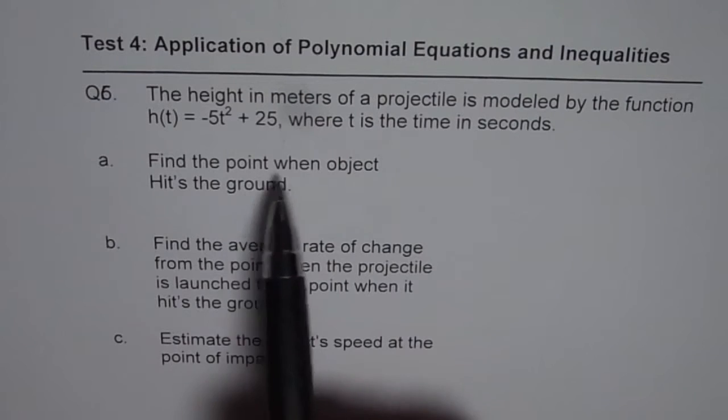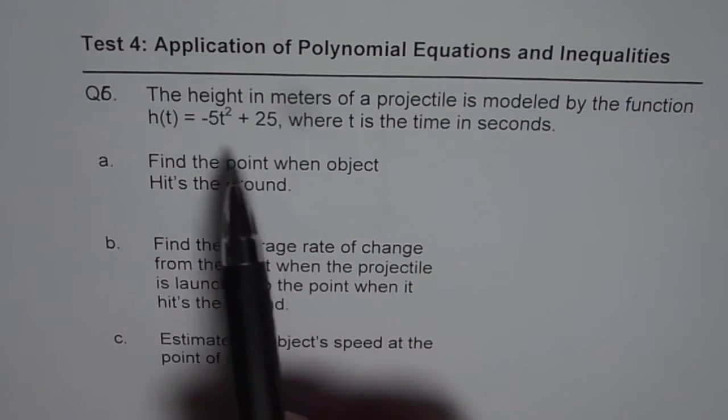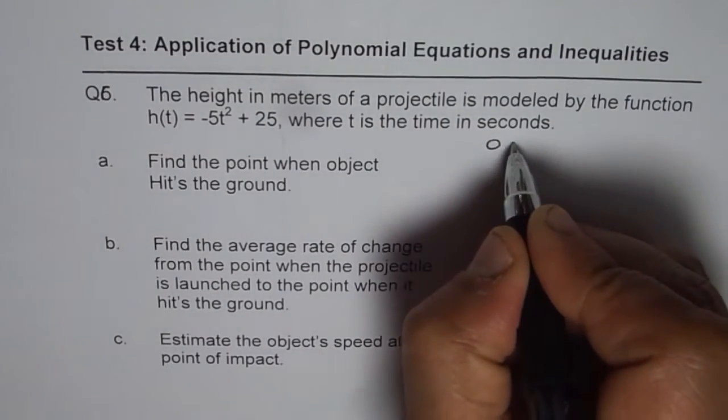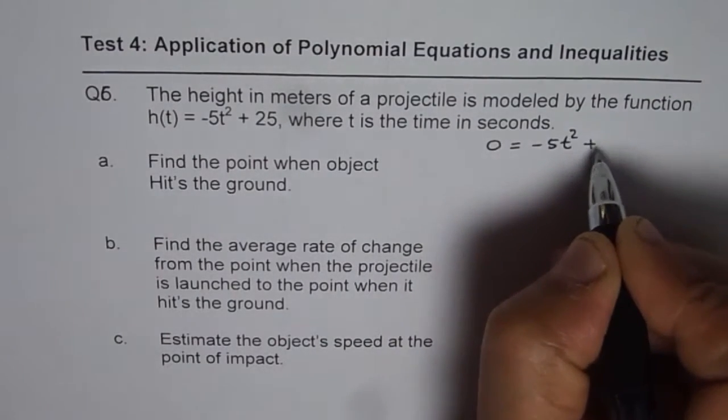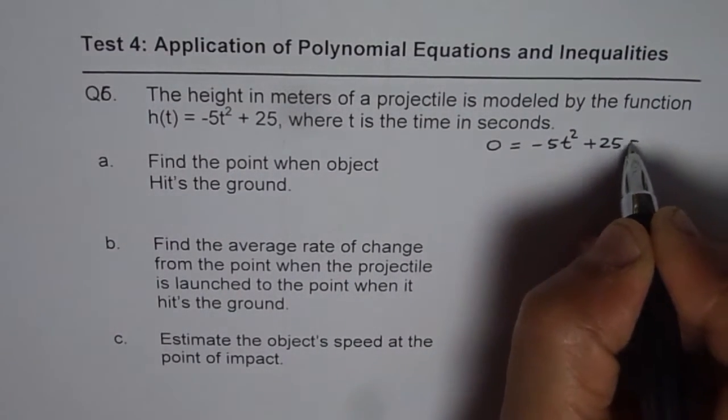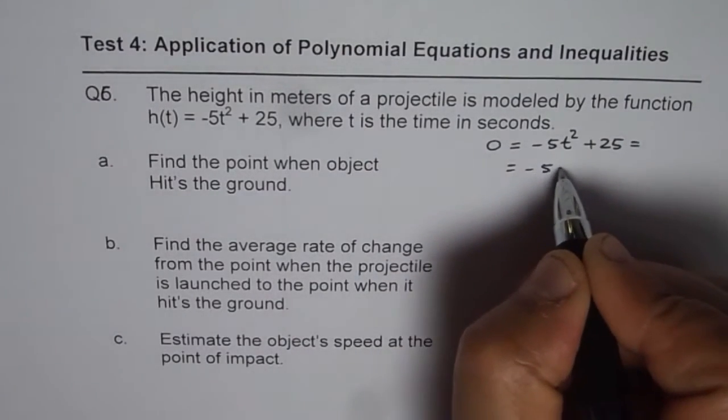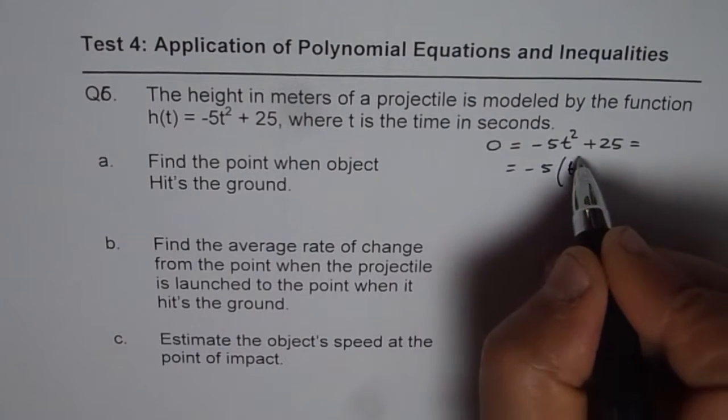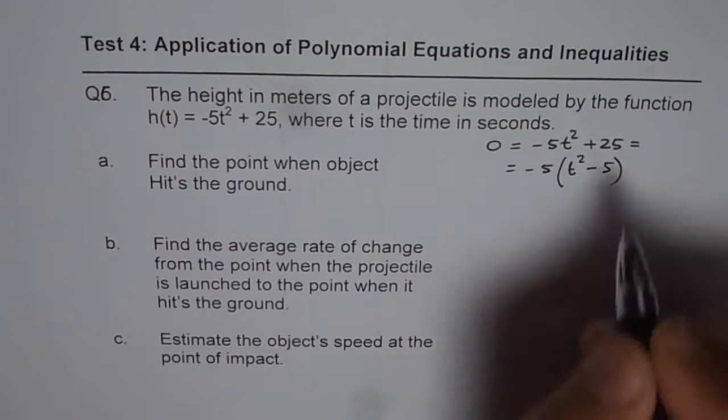First one is find the point when the object hits the ground. When the object hits the ground, height of the object will be 0. So we can solve for 0 = -5t² + 25. We can always factor this, so I will factor this as -5, and then we get t² - 5. That is what we get.